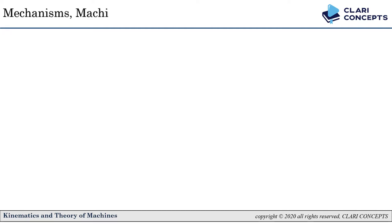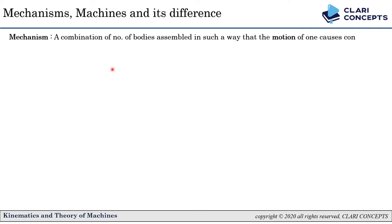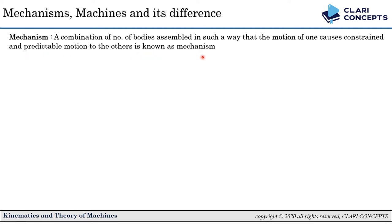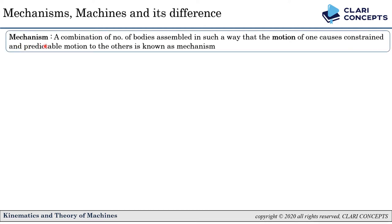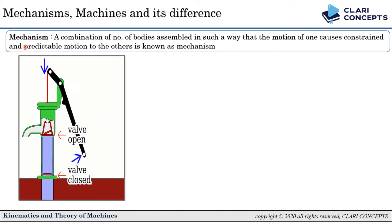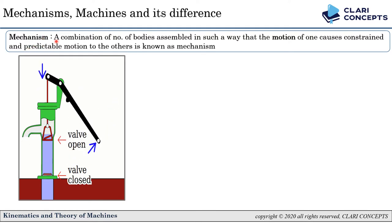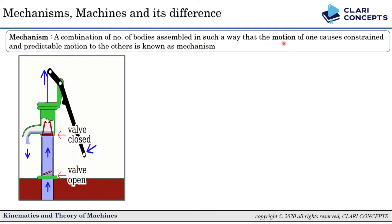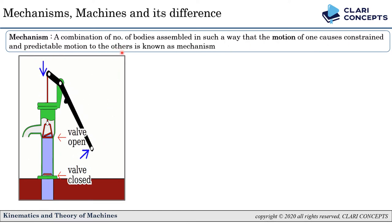Before studying all these concepts in detail, we should know exactly what we mean by Mechanism, what is a Machine, and their fundamental difference. A Mechanism is a combination of a number of bodies assembled in such a way that the motion of one causes constrained and predictable motion to the others. The definition may not be immediately clear, so we will use some examples to elaborate.